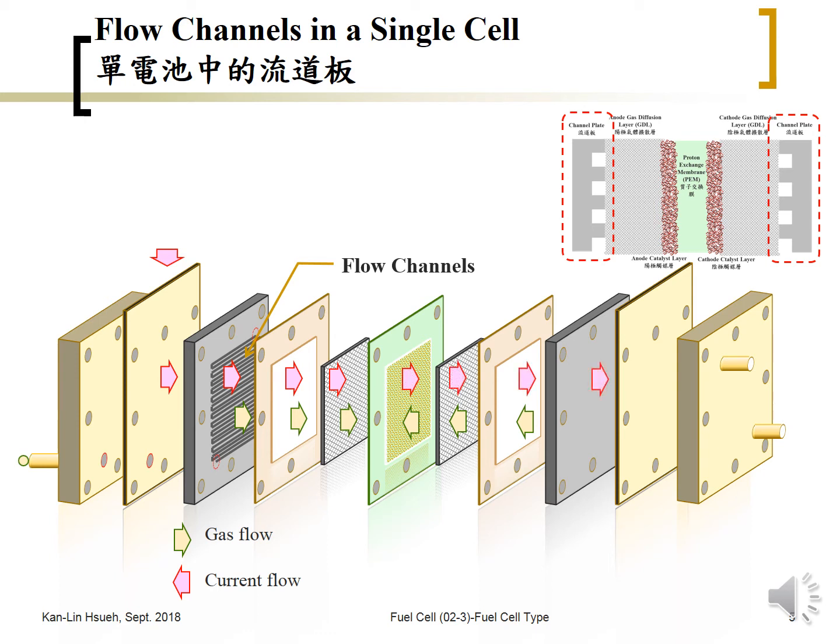Note that the current flow is opposite to the electron flow. The drawing here is for the current flow, which is opposite to the electron flow.